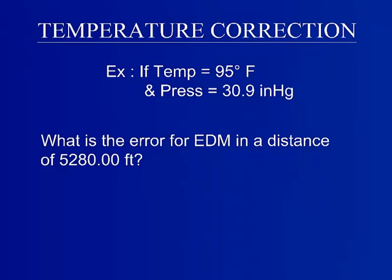This video demonstrates how to perform measurement corrections. The first portion will discuss the temperature and pressure corrections required for total stations. Let's take a look at this example. Given a temperature of 95 degrees Fahrenheit and a pressure of 30.9 inches mercury, what will the error be in a distance of 5,280 feet?